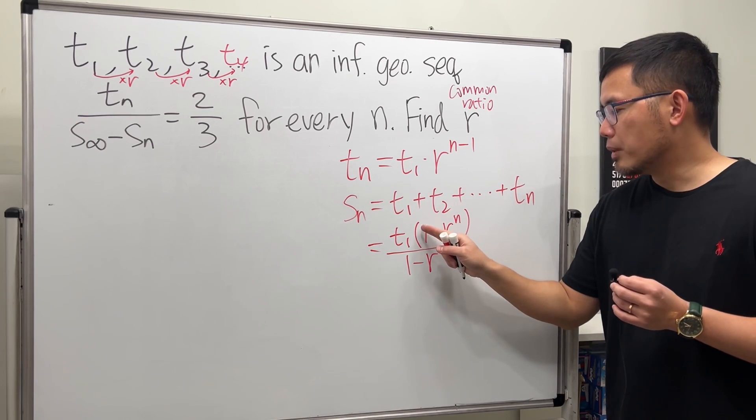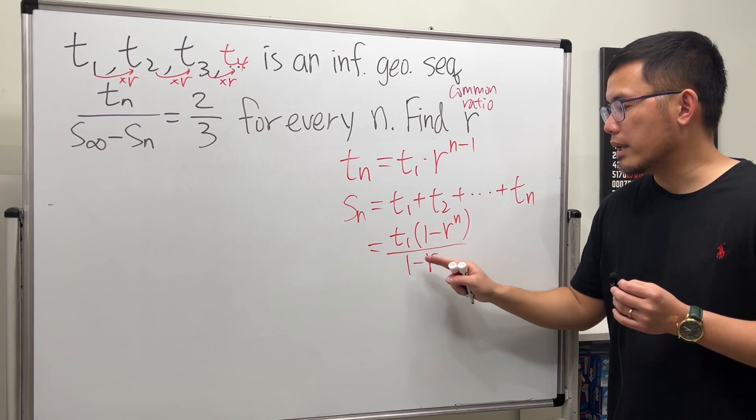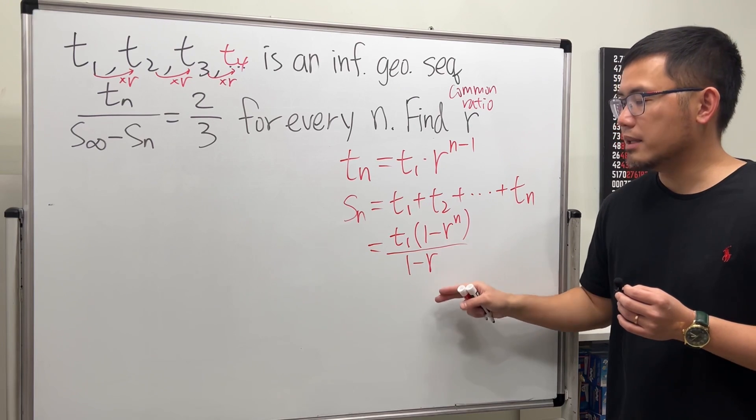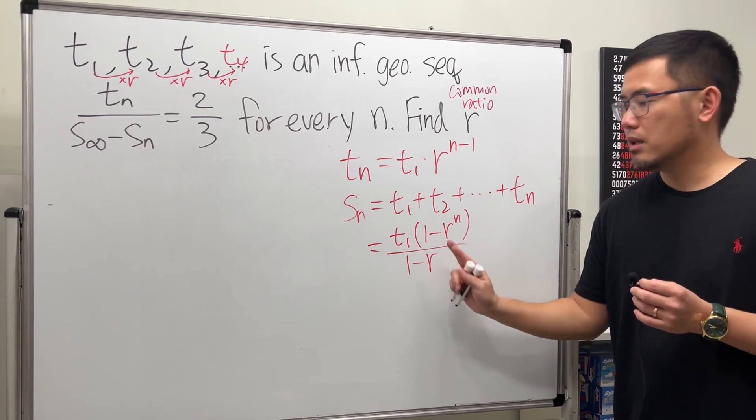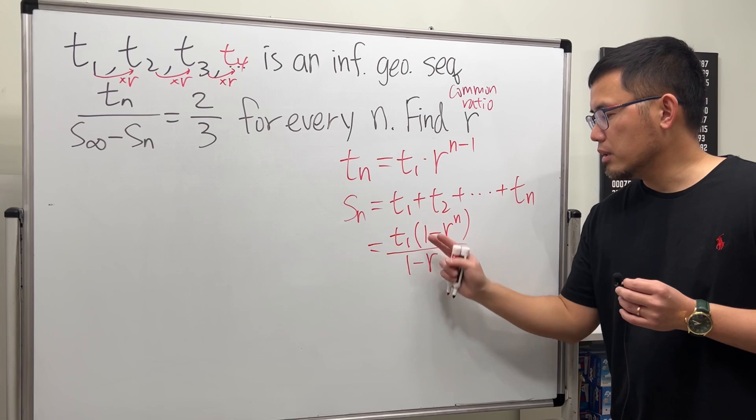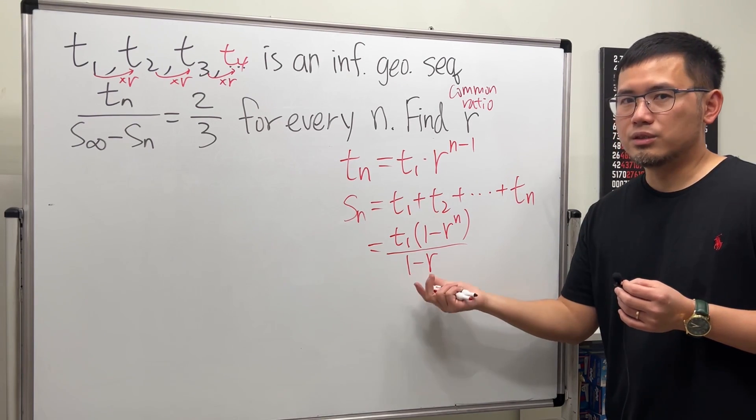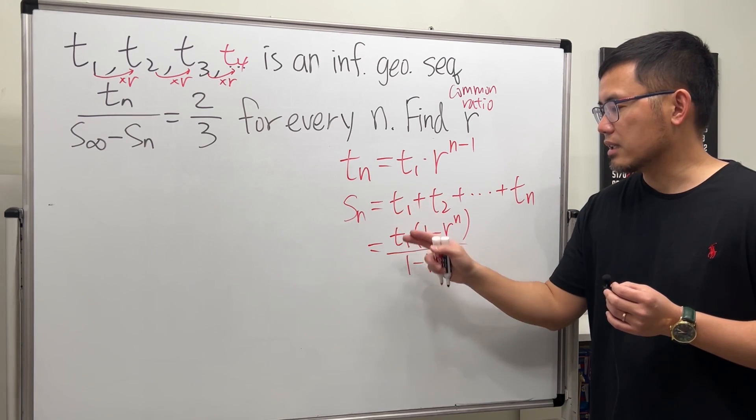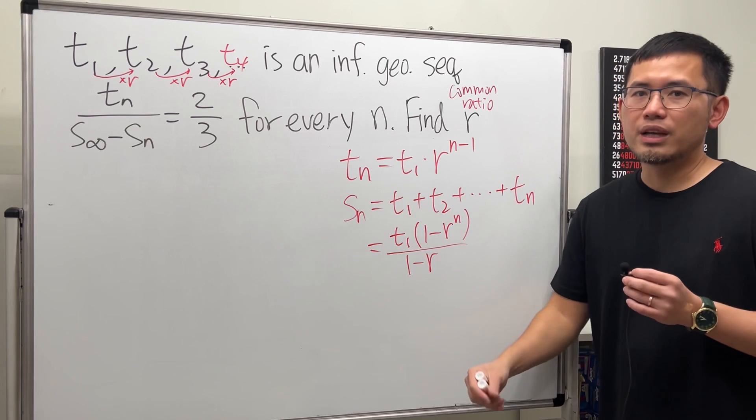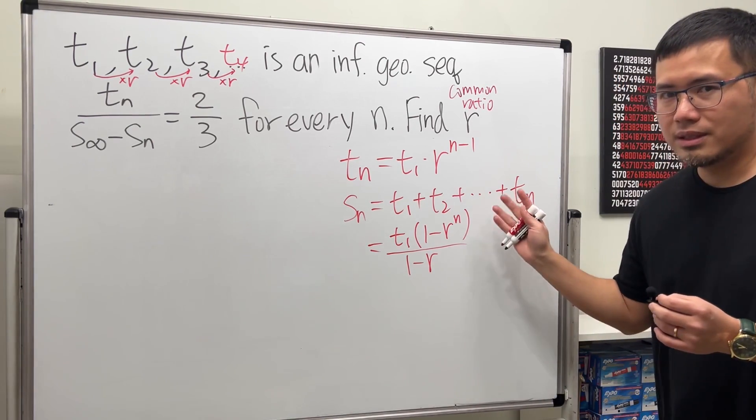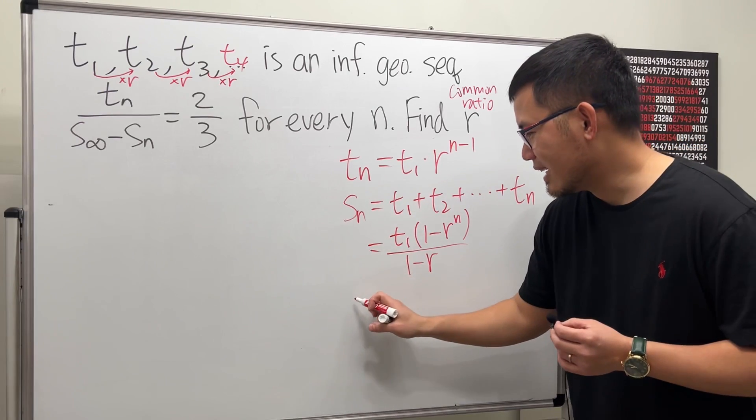Not done yet, because we still have to divide it by 1 minus r. Sometimes, though, you might see people write r to the n minus 1 over r minus 1 times t1. That's fine. If you switch the order right here, make sure you switch the order right here. It's just a matter of multiply a negative on top and a negative on the bottom. They are equivalent. I don't see a proof of this, that will be another video.